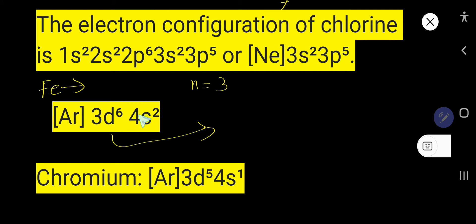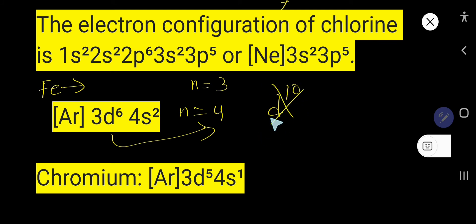For iron, the highest value of n equals four, so the valence shell is the fourth shell. If you say iron has only two valence electrons, that is incorrect. You must always consider the incomplete d subshell. If you get d¹⁰ (complete), you don't count it, but if the d subshell is incomplete, you must count it. So for iron: 6 + 2 = 8 valence electrons.